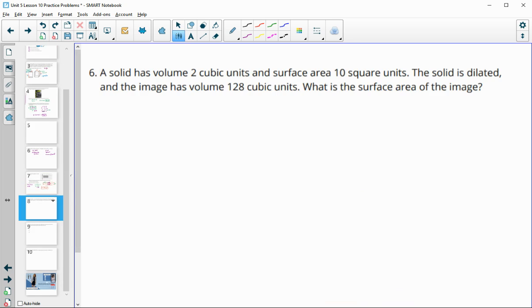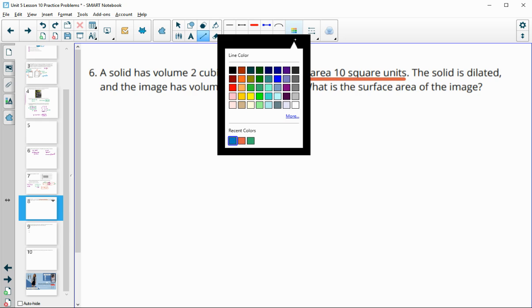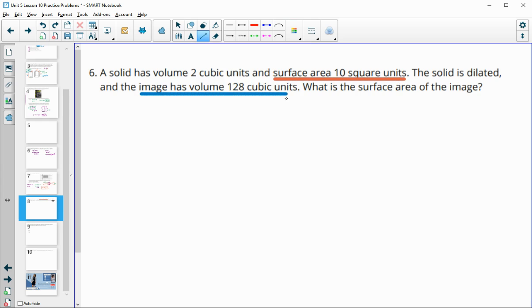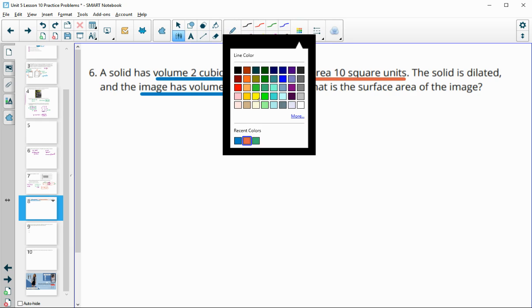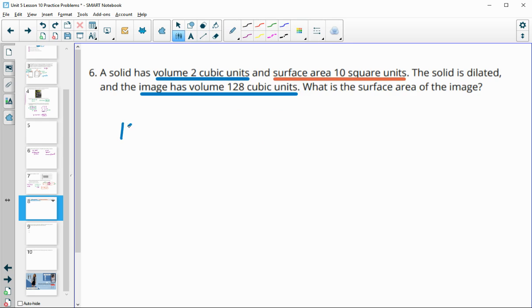Number 6, a solid has a volume of 2 cubic units. It has a surface area of 10 square units. The new volume is 128, and the original volume was 2. What is this new surface area? They gave us both volumes. We'll compare the new volume to the original volume. When we compare volumes, that gets us our scale factor cubed. So 128 divided by 2 is 64 for k cubed. That helps us get the scale factor by cube rooting this. The cube root of 64 is 4, so our scale factor is 4.